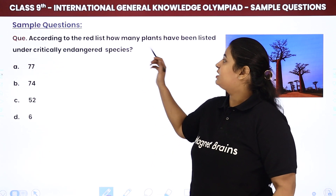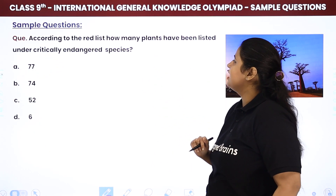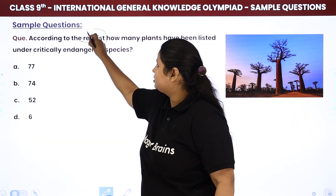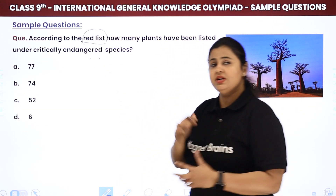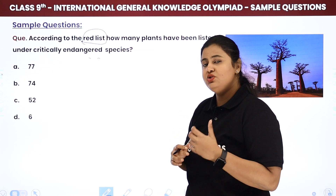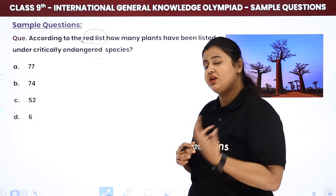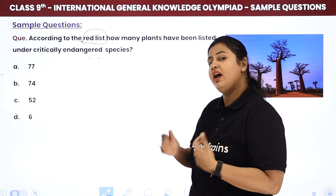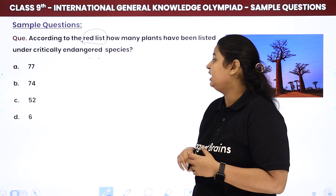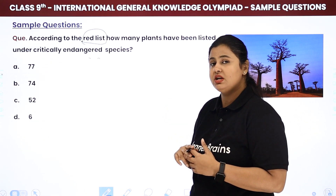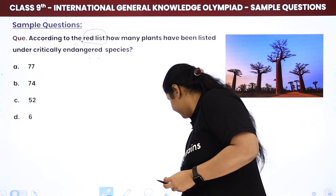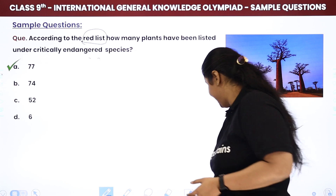The fifth question: according to the Red List, how many plants have been listed under critically endangered species? We talked about the Red List, in which endangered and critically threatened species are enlisted. We especially discussed the Western Ghats. The number of plant species listed as critically endangered was 77.